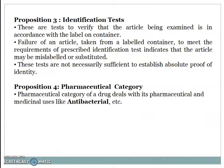Proposition 3: Identification Tests. These are tests to verify that the article being examined is in accordance with the label on the container. Failure of an article taken from a labeled container to meet the requirements of prescribed identification test indicates that the article may be mislabeled or substituted. These tests are not necessarily sufficient to establish absolute proof of identity.